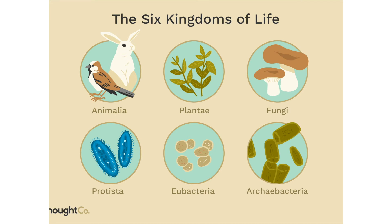Within each domain we have kingdoms. In the domain bacteria we have the kingdom eubacteria. In the domain archaea we have the kingdom archaebacteria. The other four kingdoms — protista, animalia, plantae, and fungi — belong in the domain eukarya because they are eukaryotic.